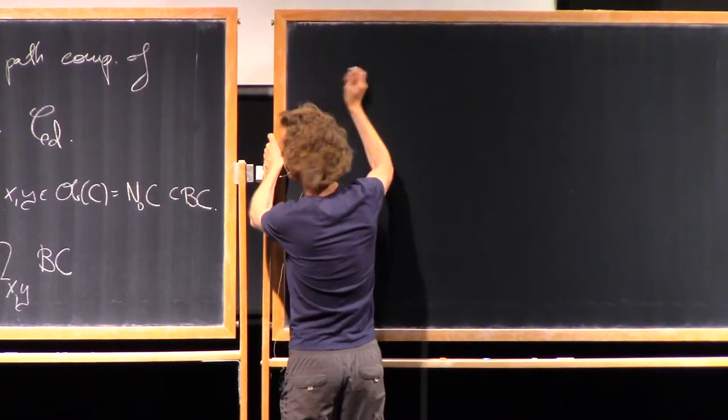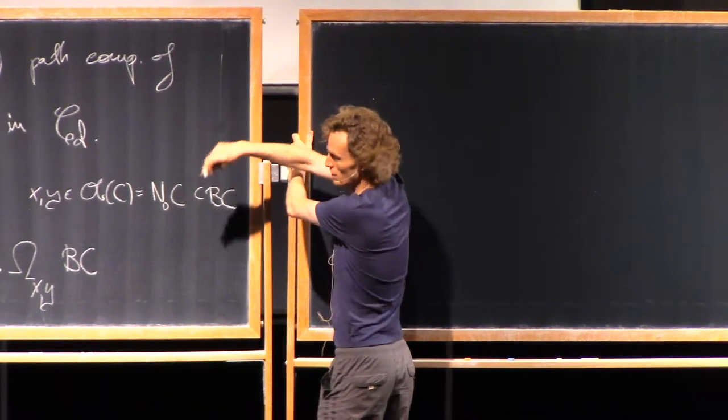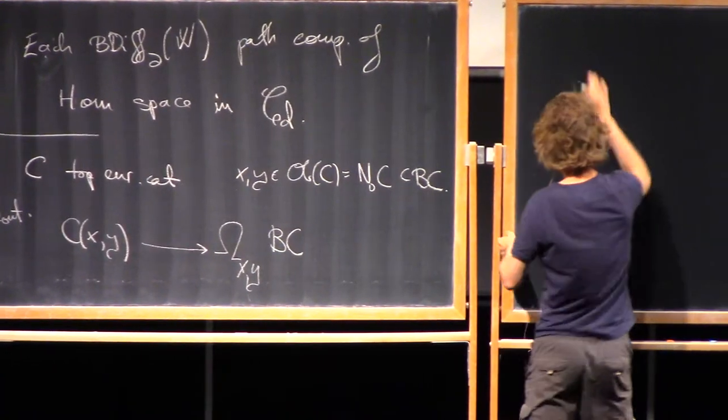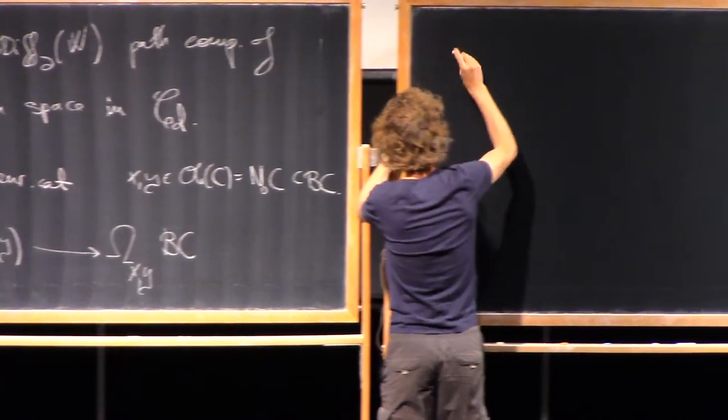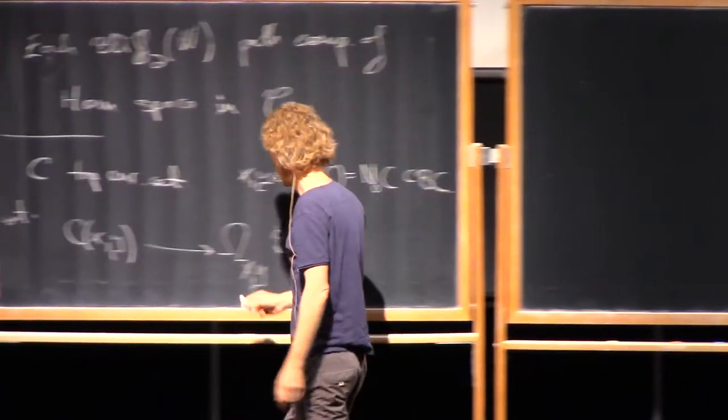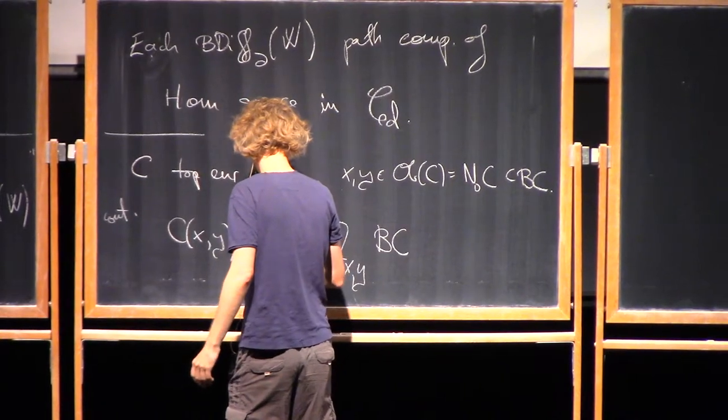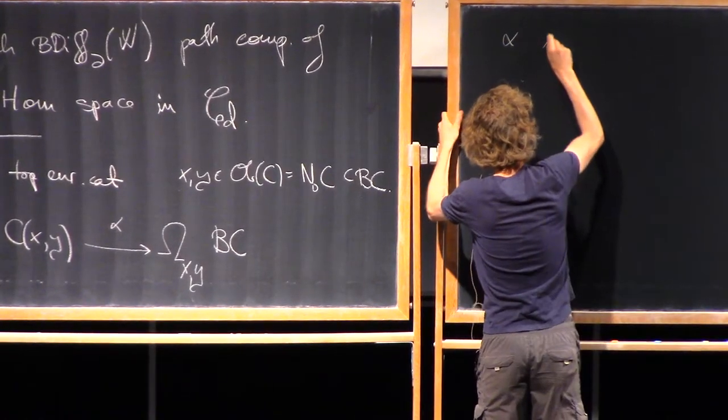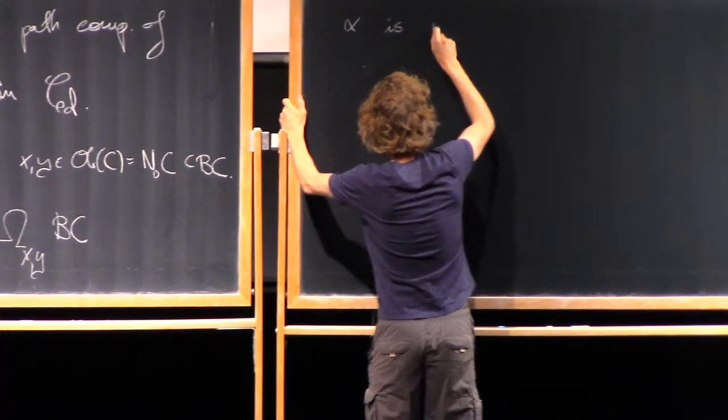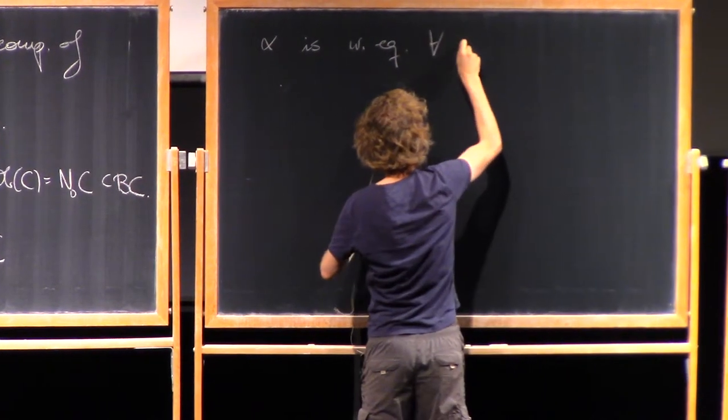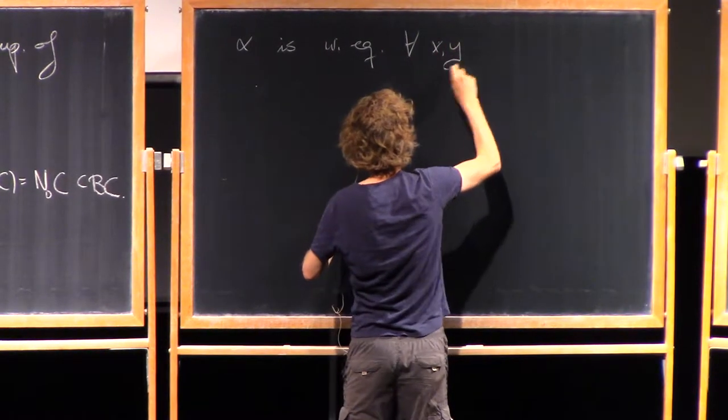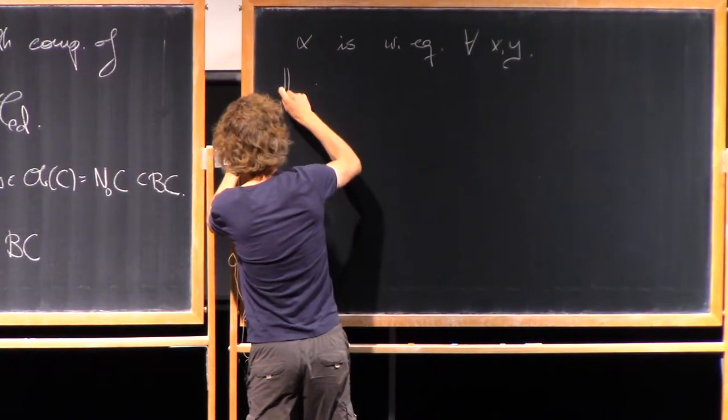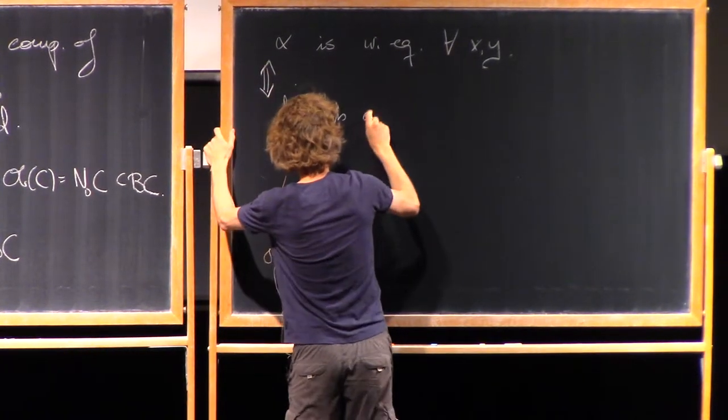If, so, this may or may not be an interesting map. The case where, okay, let's call it something, alpha. Maybe it's a weak equivalence. It's a kind of standard fact that this is a weak equivalence for all x and y if and only if hc is a groupoid.